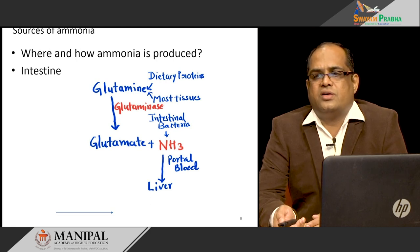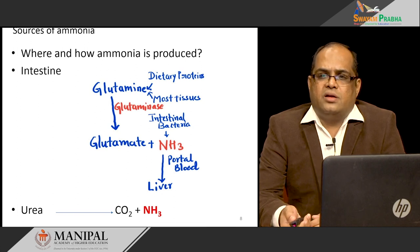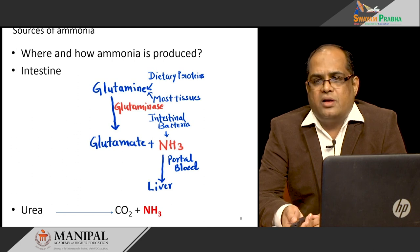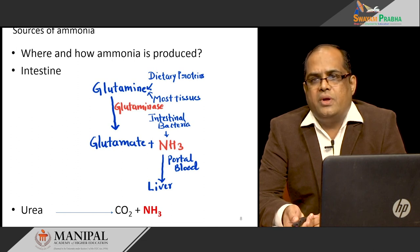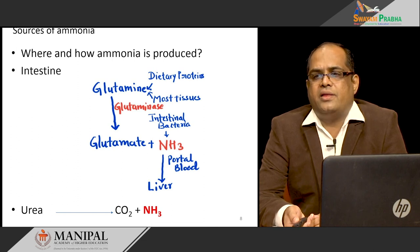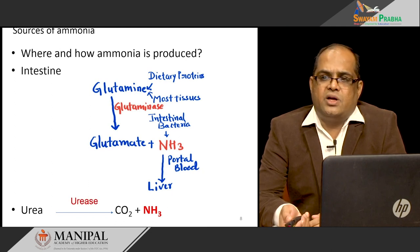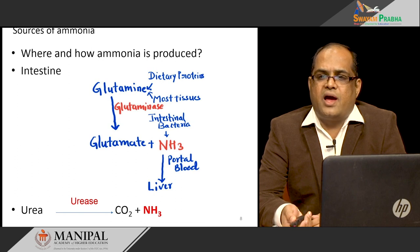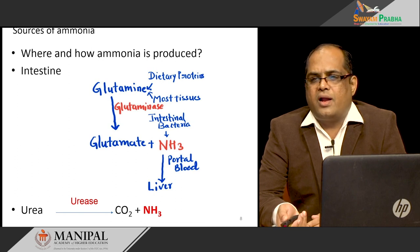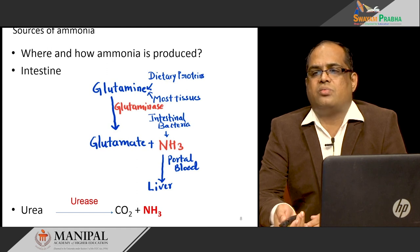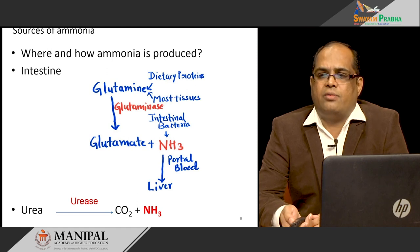Also, urea present in the blood can be taken up by the intestine, where the enzyme urease converts that urea into carbon dioxide and ammonia. This is another source of ammonia derived from urea.